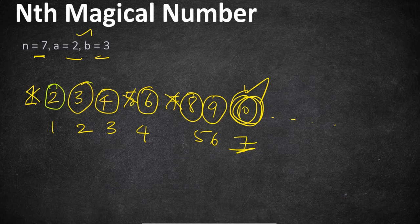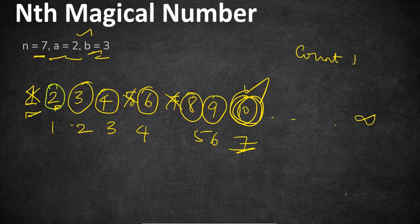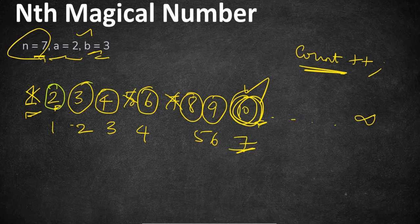The naive solution would be iterating from 1 till the maximum value and checking whether each number is divisible by either a or b. If it is, we increment a counter, and when the counter matches the given n, we return that number as output. But obviously this is going to hit the time limit, as the values can be very large — greater than 10^7 plus 9 — so we need a better approach.